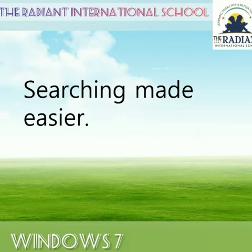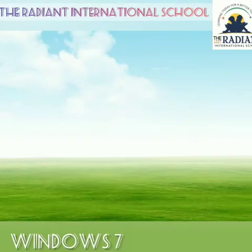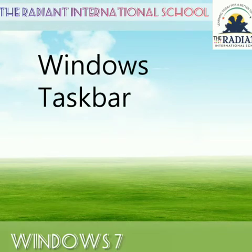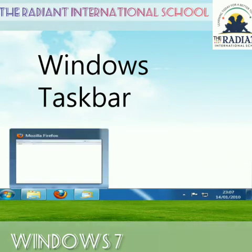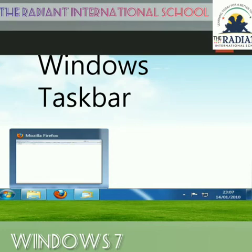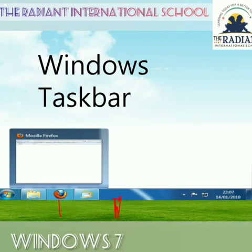Searching is made easier — you can quickly search more things in more places on your computer. The taskbar of Windows 7 is more flexible and application-oriented. We can pin our favorite programs on the taskbar for easy access. Here we can pin programs — see Mozilla Firefox pinned here. The new Aero feature allows us to make open windows transparent and make the desktop visible.